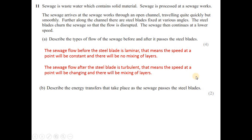Describe the energy transfers as the sewage passes the steel blades. Before the blades the fluid has only kinetic energy due to its laminar flow. After passing the blades, friction causes kinetic energy to decrease, and thermal energy is produced. Because kinetic energy is lost, the speed of the sewage decreases, as stated in the question.